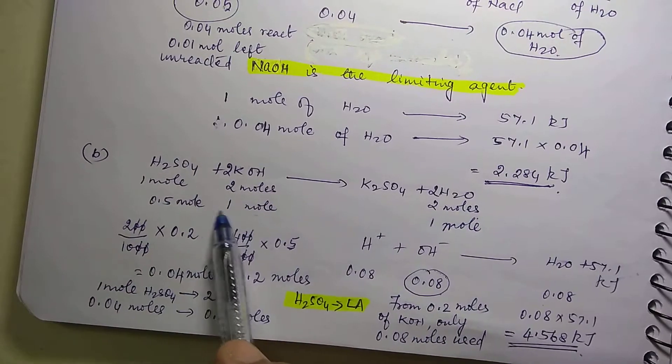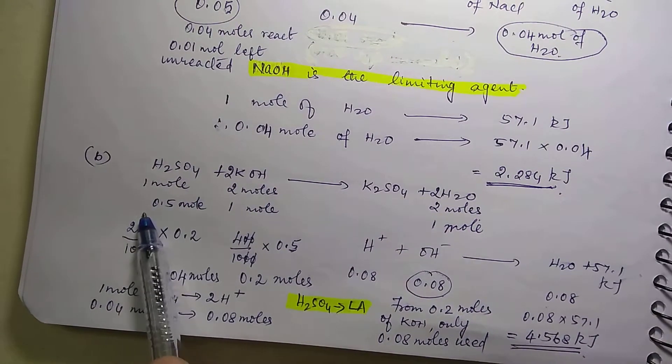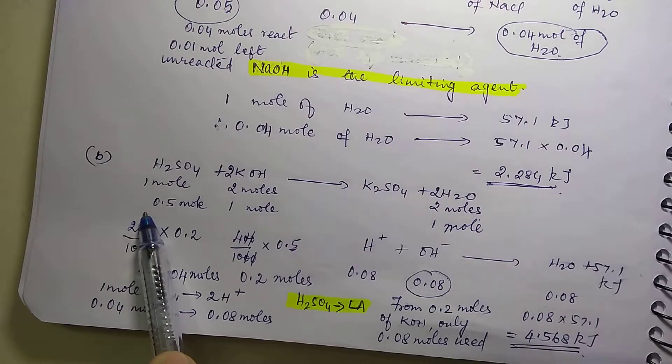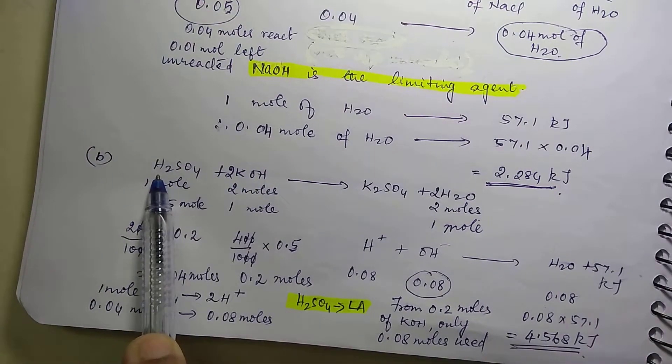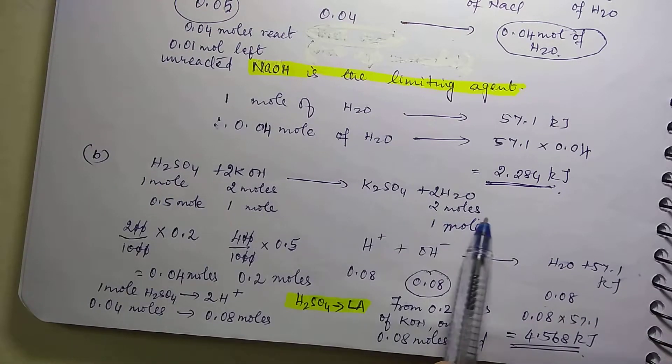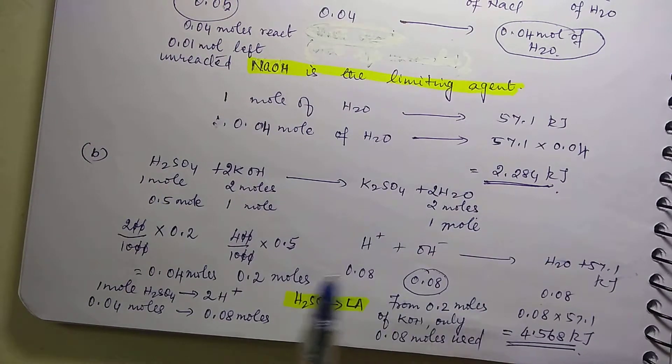So if I take KOH as 1 mole, then H2SO4 would be half a mole. If this is 1 to 2 and if I take this as 1, this would be half. So basic concept you have to understand.